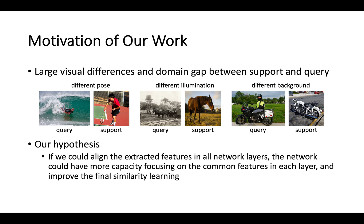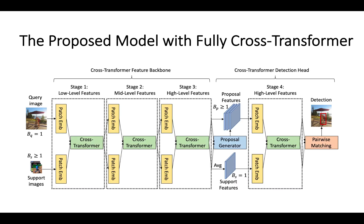Simply aligning the two branches at the high-level feature space may not be optimal. If we could align the extracted features in all network layers, the network could have more capacity to focus on common features at each layer and improve the final similarity learning. Based on this observation, we propose a fully cross-transformer-based model for FSOD, using a multi-layer deep cross-transformer for joint feature extraction of both branches, incorporating it into both the feature backbone and feature extractor.